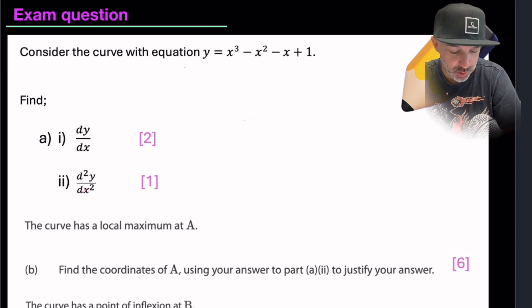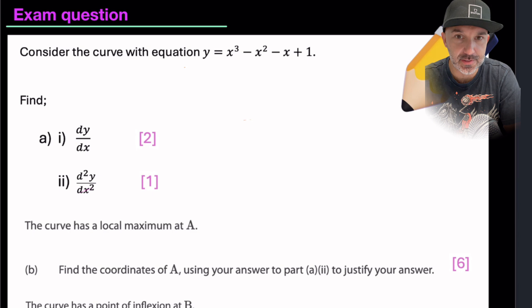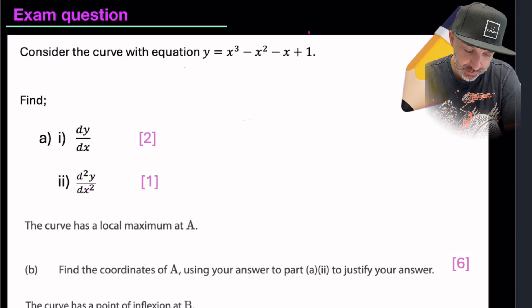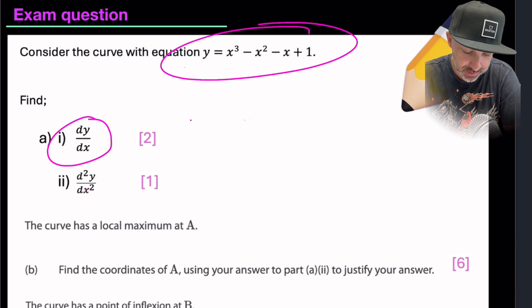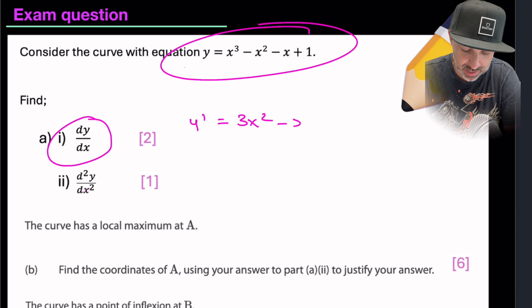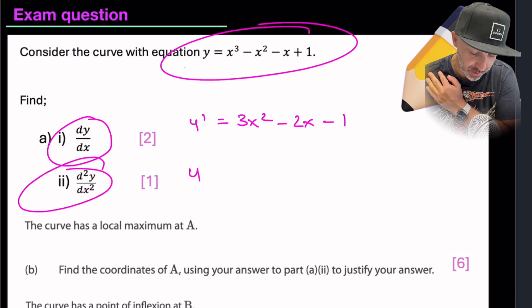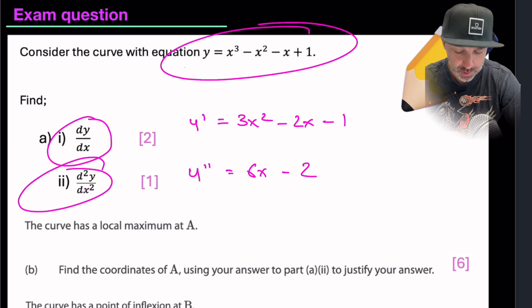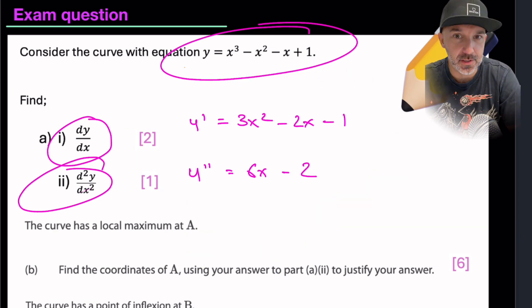Here is a past exam question worth 11 marks involving second derivatives. Consider the given curve and find the first derivative dy/dx. The first derivative y' = 3x² - 2x - 1. The second derivative is y'' = 6x - 2. Part 1 gives the gradient function; part 2 relates to the concavity of the curve.